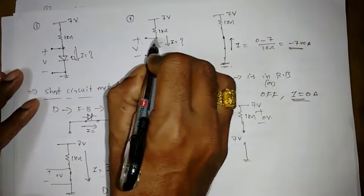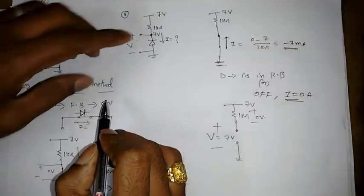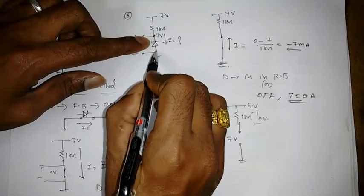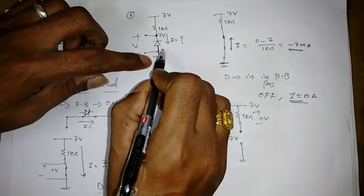So that means we can conclude that so V is 7 volt. So here 7 volt is there at the cathode terminal. And see if you see the anode is connected to ground. That means it is 0 volt.